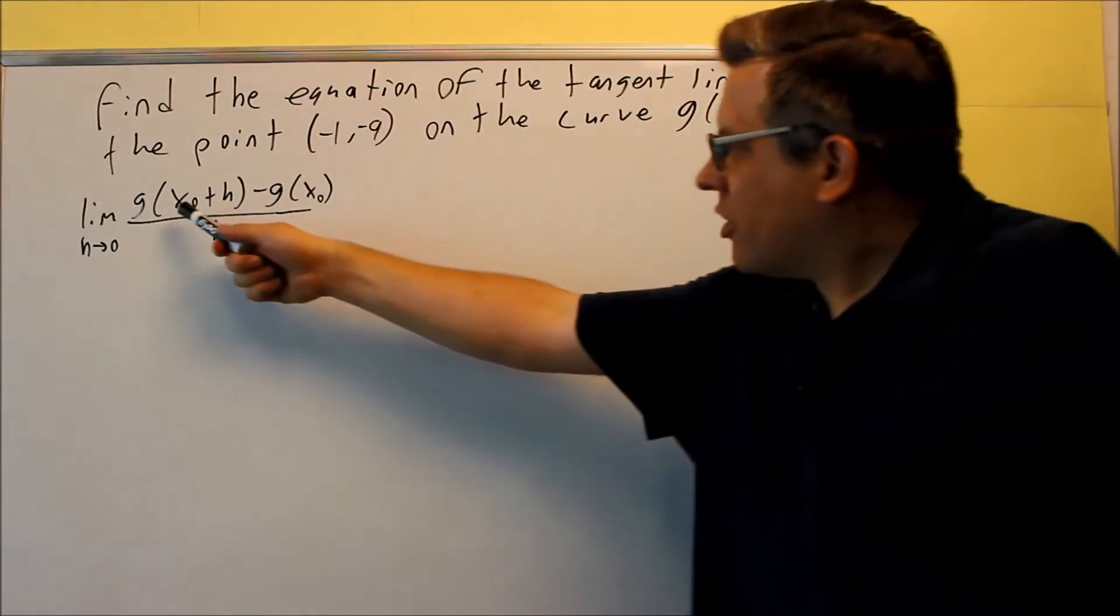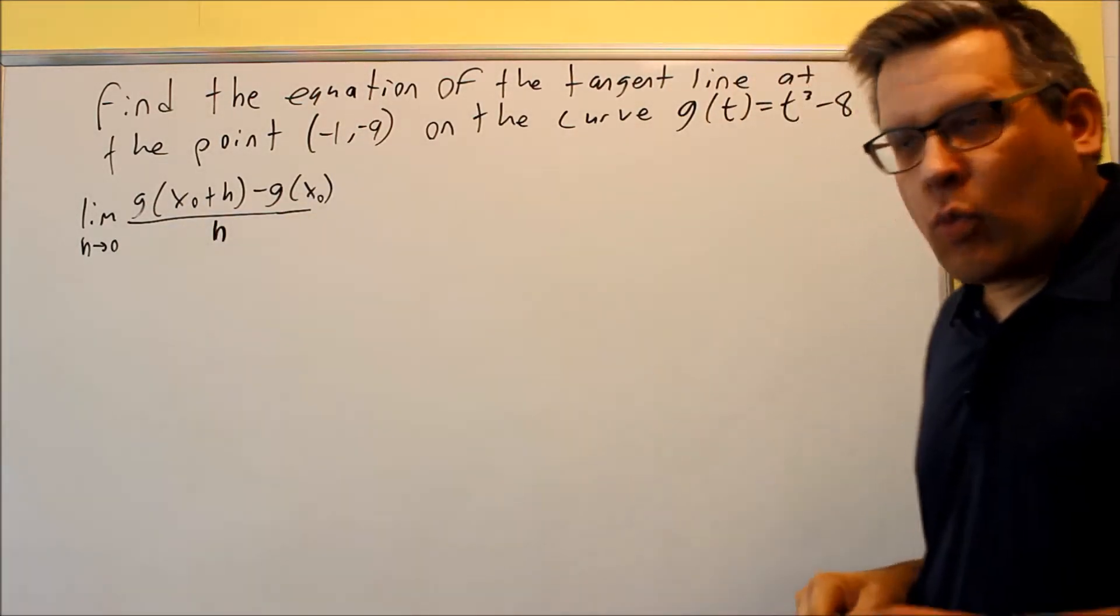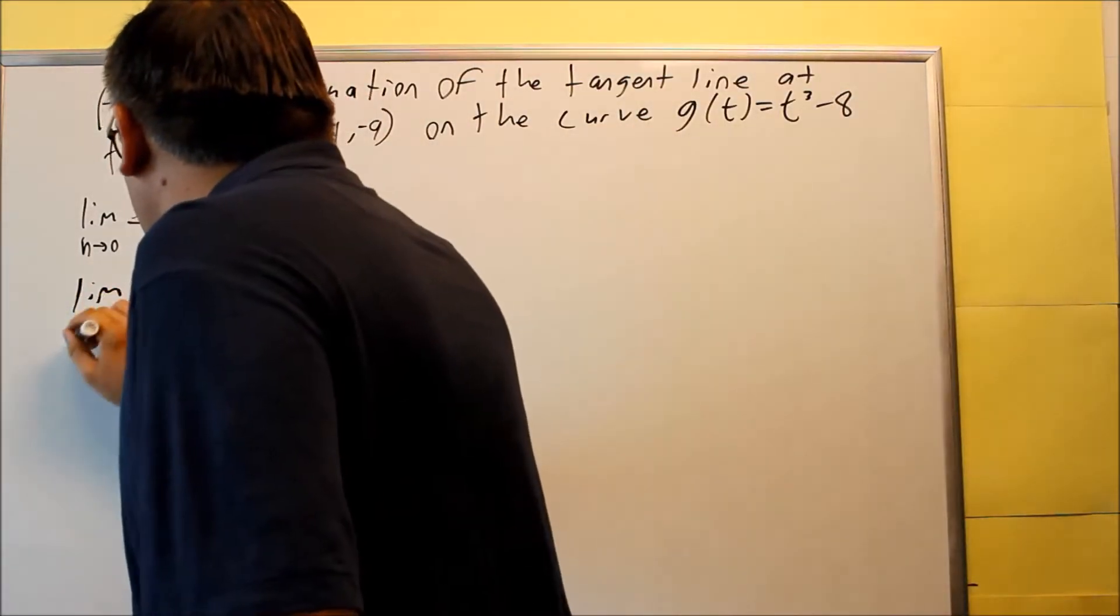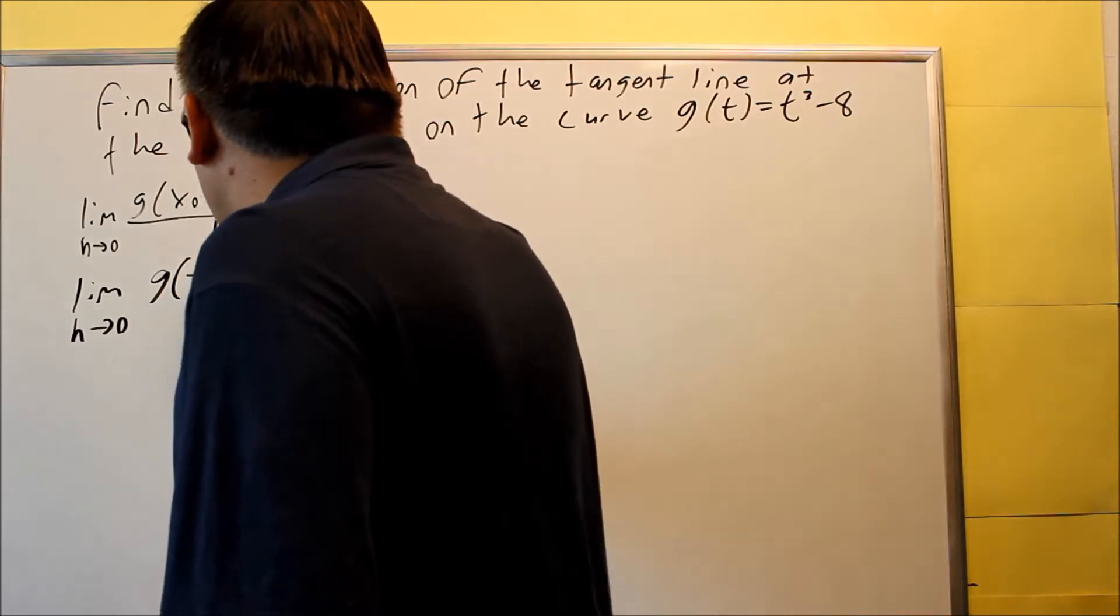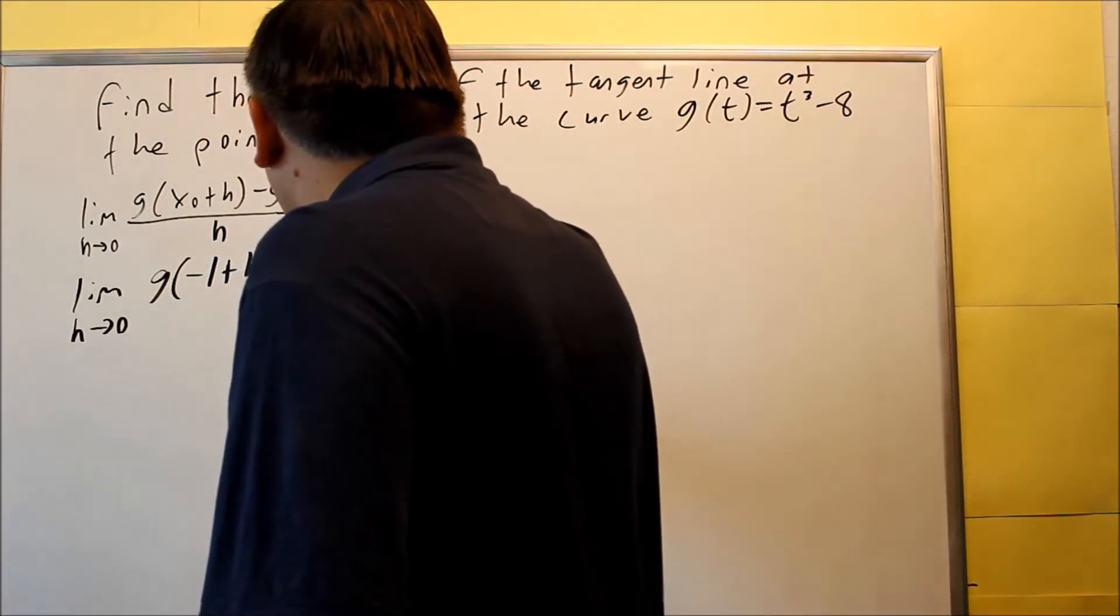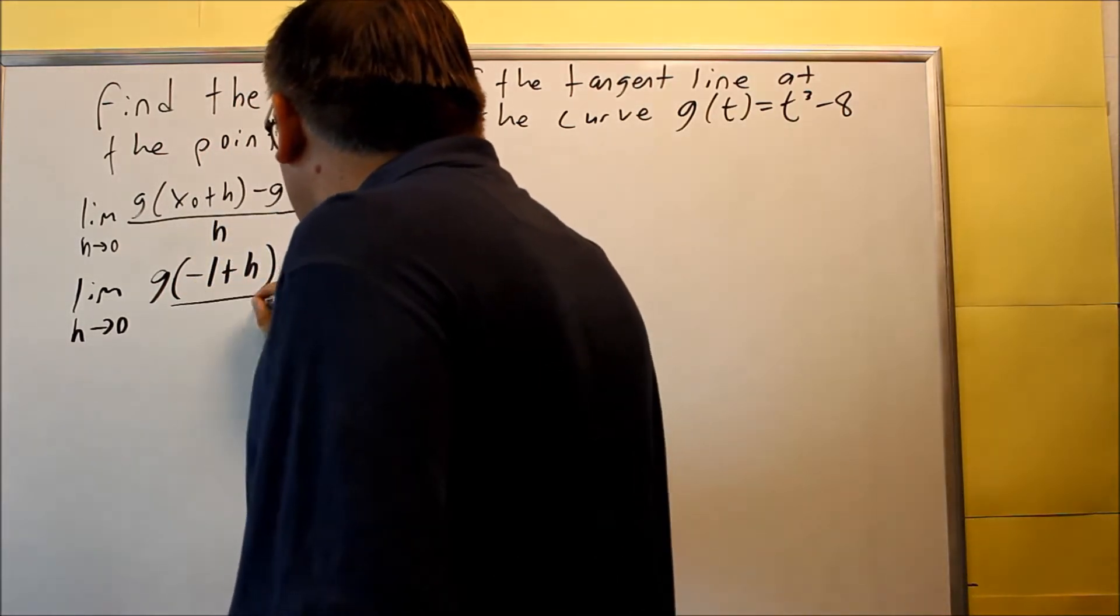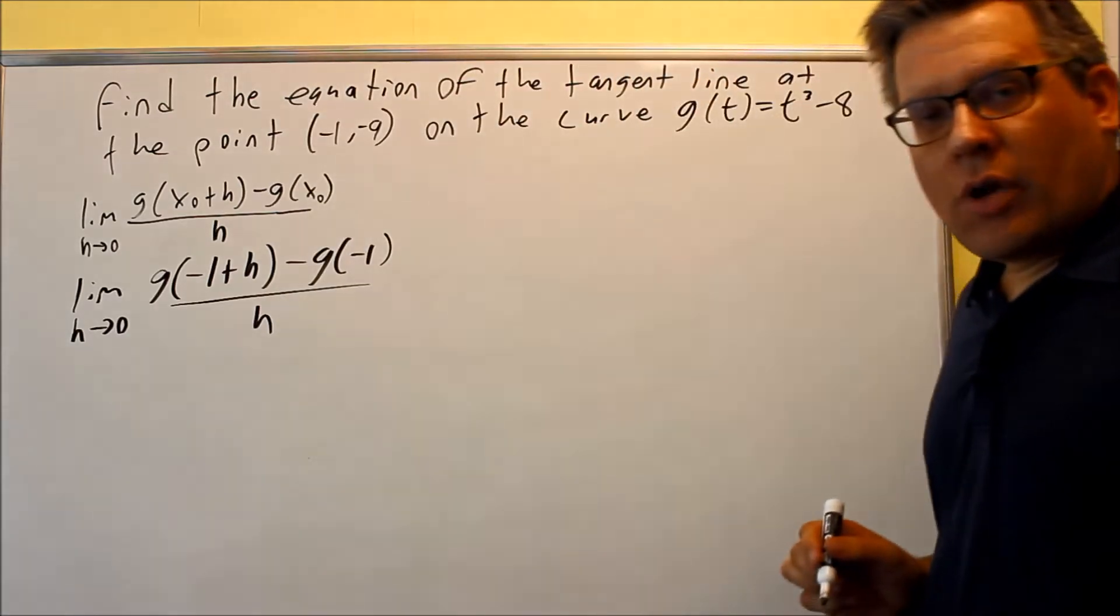Now, your x sub 0 here in this problem is going to be negative 1, so we're going to put that in here. We're going to do a limit as h goes to 0. I have g of negative 1 plus h, I have g of negative 1, and on the bottom we have an h.